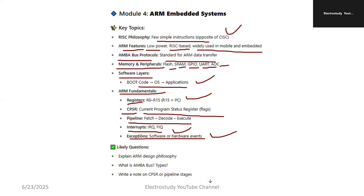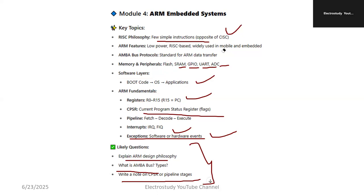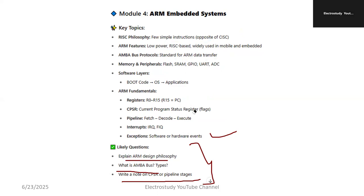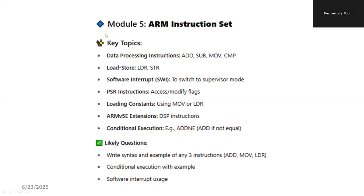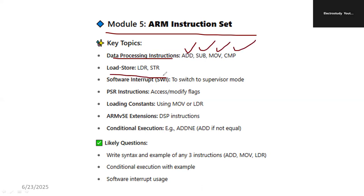Important questions for Module 4: explain the ARM design philosophy; what is the AMBA bus and its classification or types; short note on CPSR; pipeline strategy and stages. Surely one or two questions will be asked in the examination — I can guarantee — because these are the most commonly asked questions. Checking previous year question papers confirms these are the most probable questions. ARM instructions: software interrupts, difference between hardware and software interrupts, switching to supervisor mode, PSR instruction to access or modify flags, loading constants using MOV or LDR, ARM extension DSP instructions, and conditional execution.